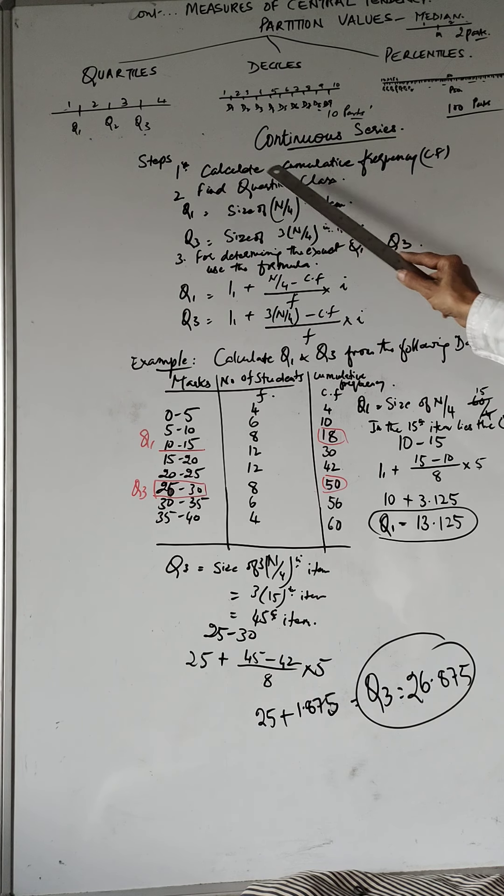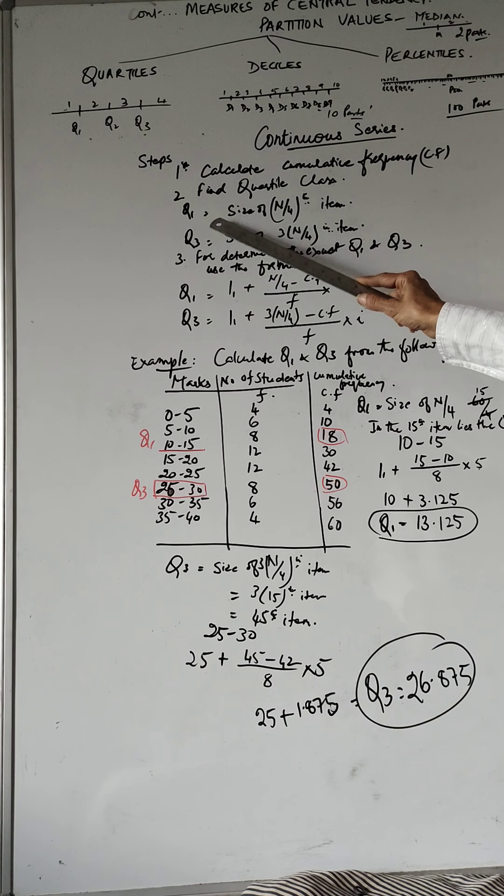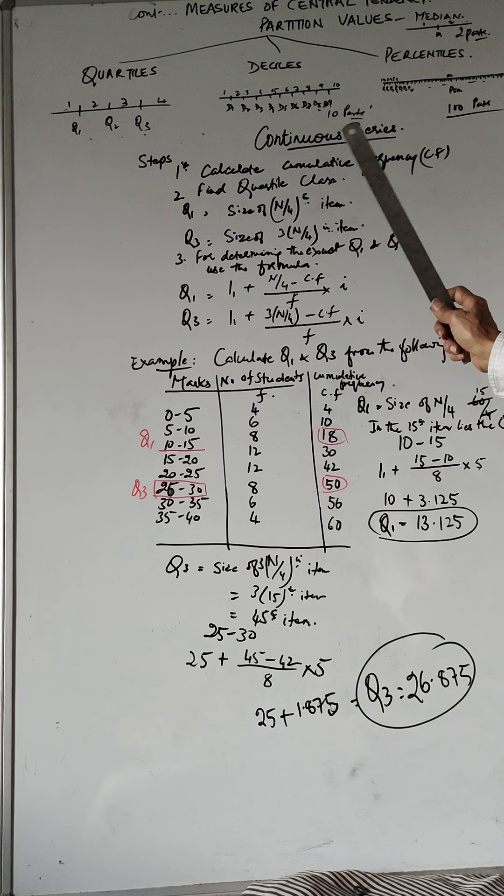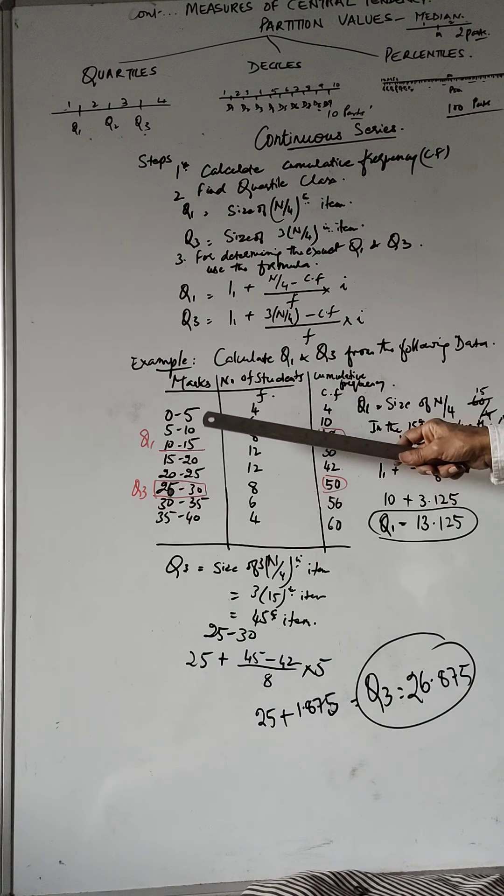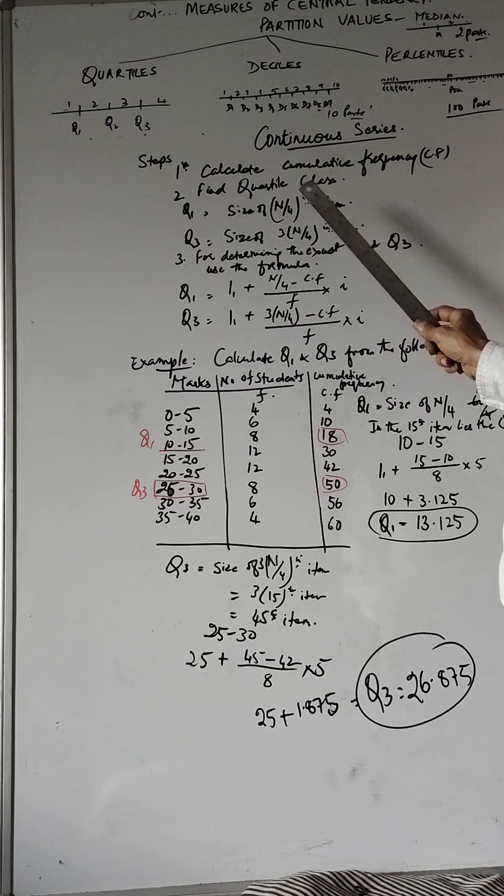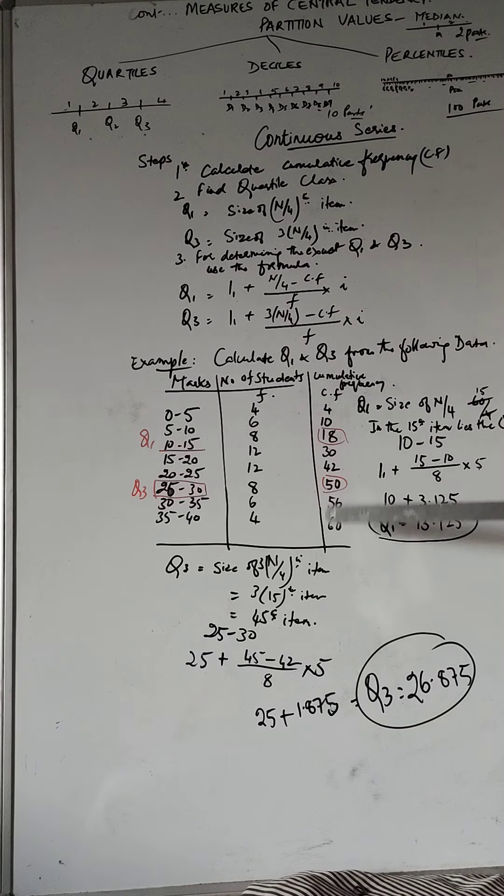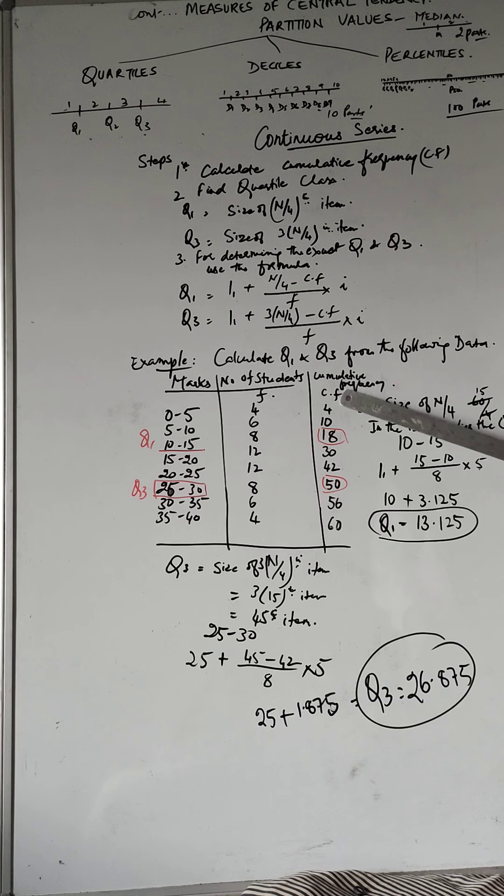the second step is find quartile class. So we want to find out the first quartile or the lower quartile, where does it lie? Where is the class interval of quartile 1, first quartile? Now in this, what do we do? We take n by 4th item. Now n here is 60. So Q1 is equal to the size of n by 4th item, which comes to 60 divided by 4, the 15th. So it is in the 15th item that you will find the first quartile.